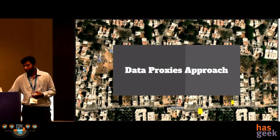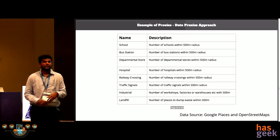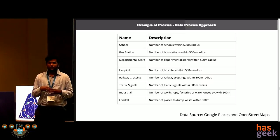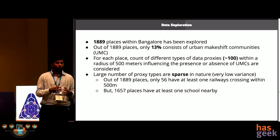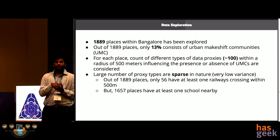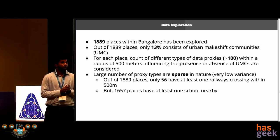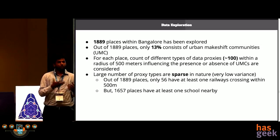The next major approach was a data proxies approach. By data proxies, I mean entities at a given location such as schools, hospitals, highways, or railway crossings. In this approach, we had a total of 1,889 places containing both UMCs and non-UMCs. The data had 13% UMCs and the rest were non-UMCs. The hope was to use the presence of these different proxies — such as schools and hospitals — to see if they influence the presence or absence of a UMC.